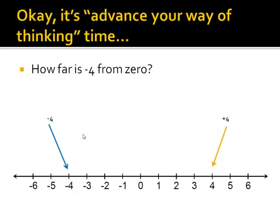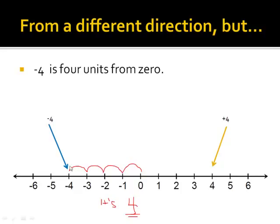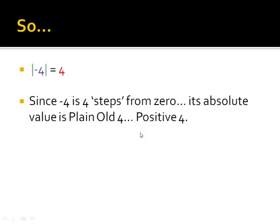So, how far is negative four from zero? One, two, three, four. It's four. The absolute value of negative four is four. Since negative four is four steps from zero, its absolute value is plain old four. Positive four.